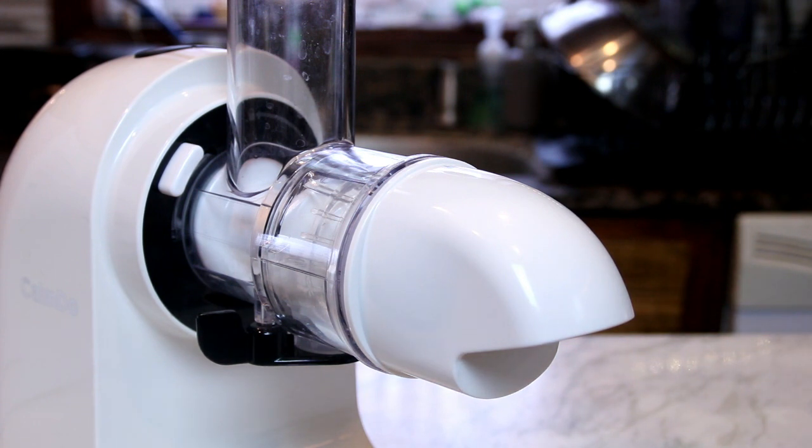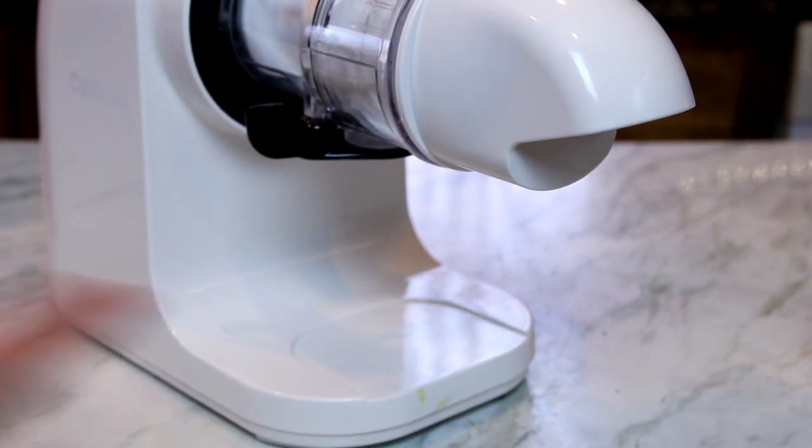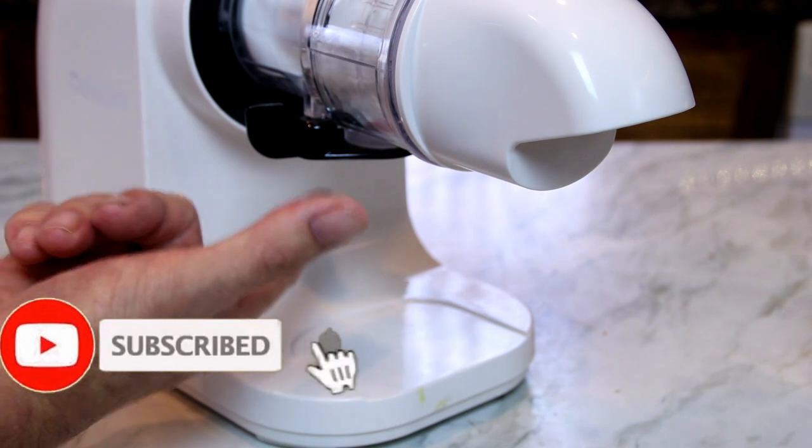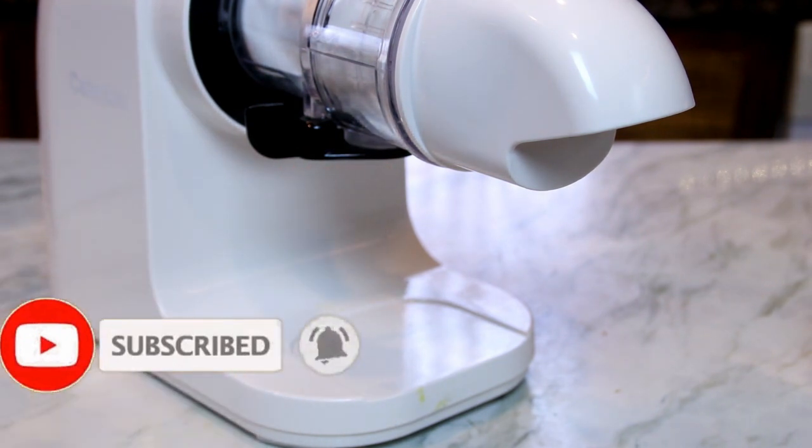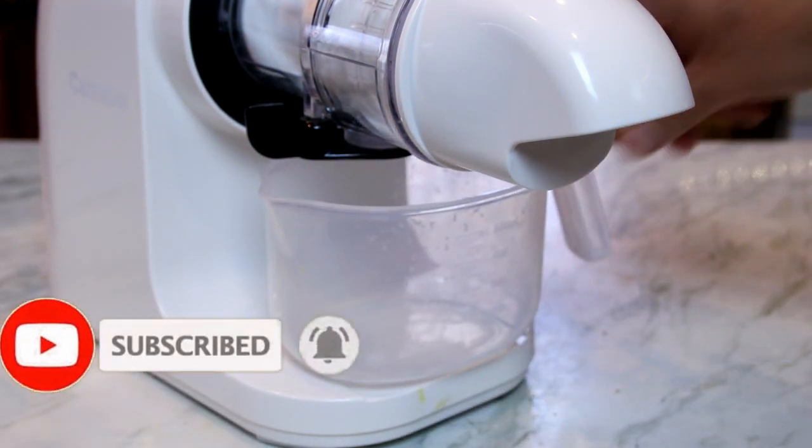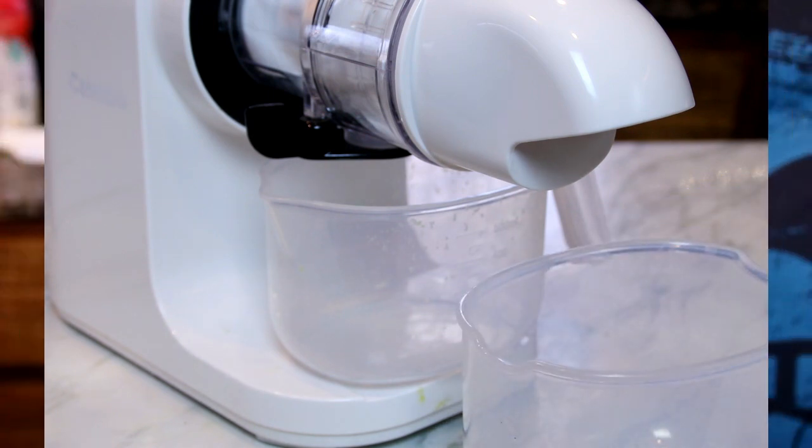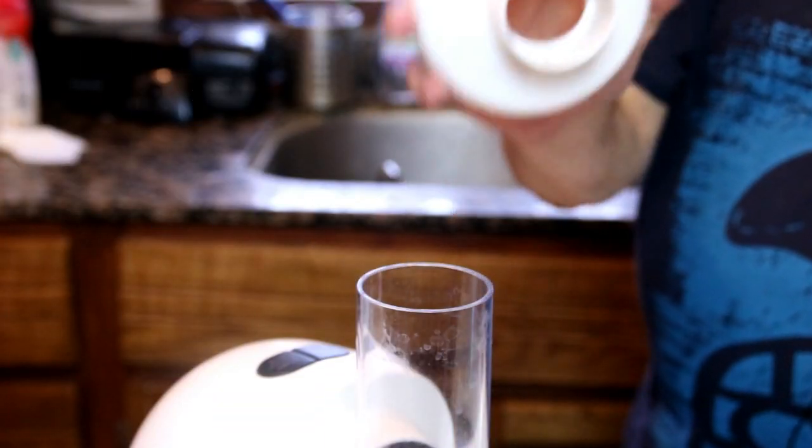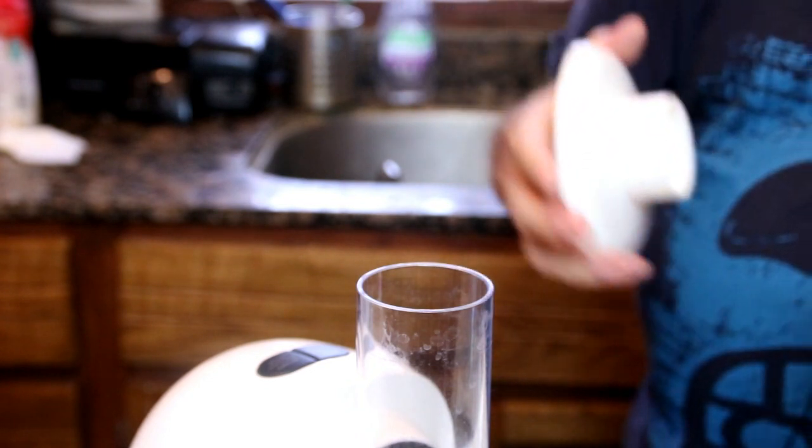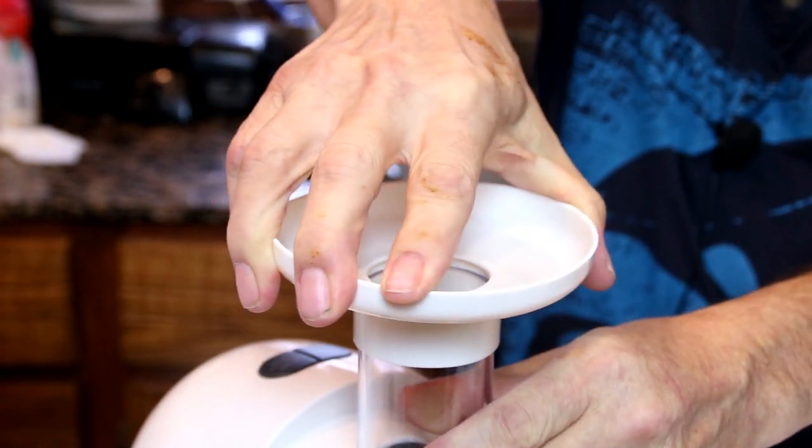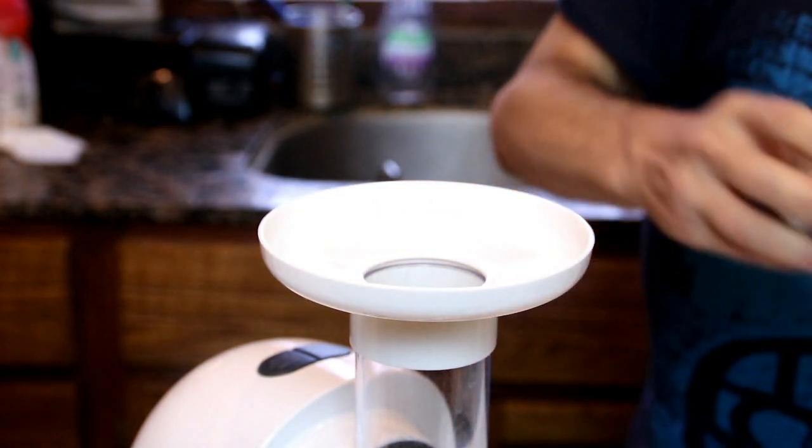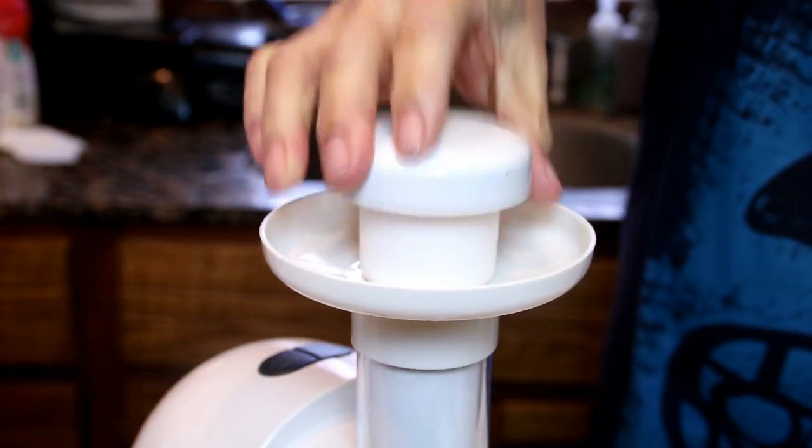It doesn't get much easier. Now again, this is the sludge outlet and this is the juice outlet. We put our containers under the juice outlet and the sludge outlet. When you get it at first, you get this little ring for the feeder that just slips on there, and then you've got your plunger. We're good to go.